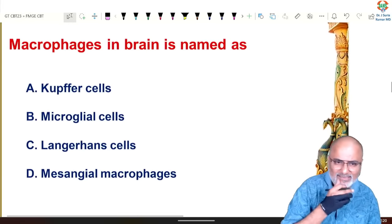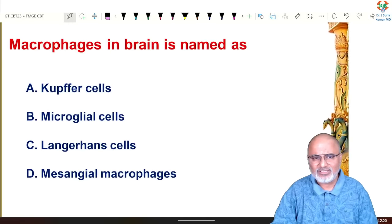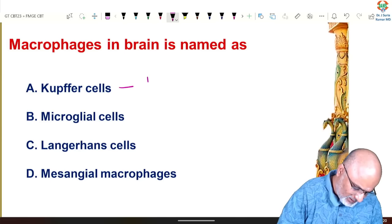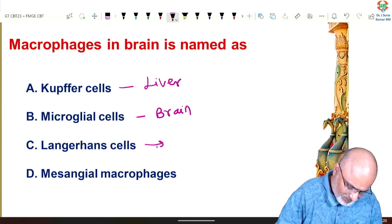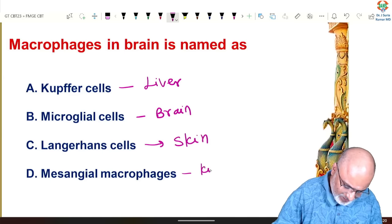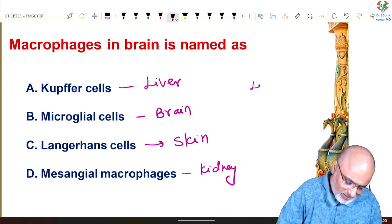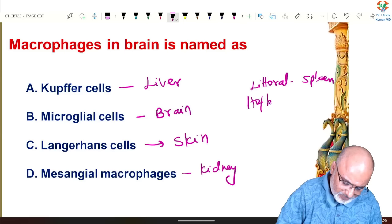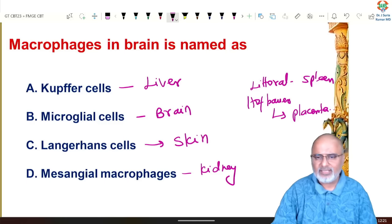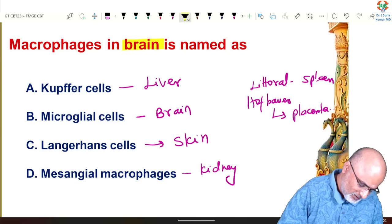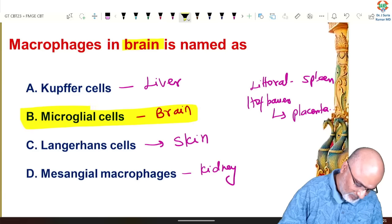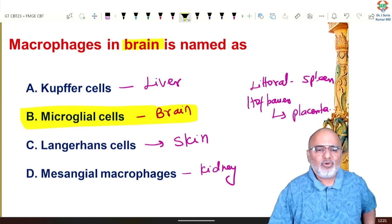Macrophages in different locations have different names. Kupffer cells are in the liver. Microglial cells are in the brain. Langerhans cells are in the skin. Mesangial cells are seen in the kidney. Littoral cells are in the spleen. Hofbauer cells are seen in the placenta. So macrophages in the brain are named microglial cells.